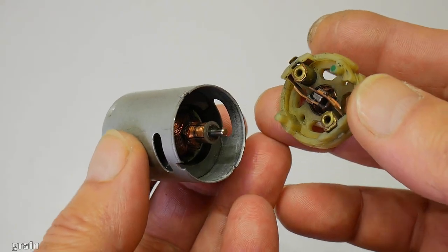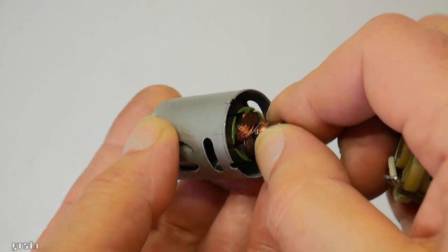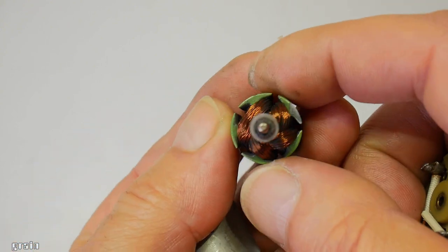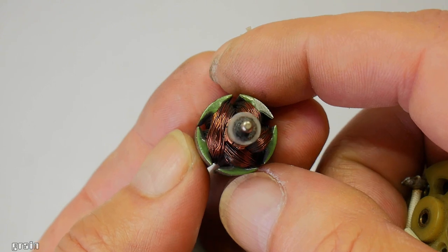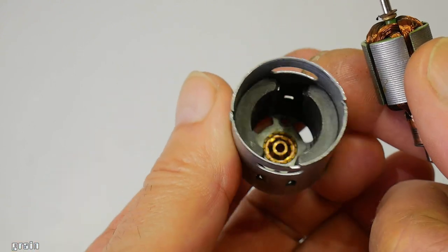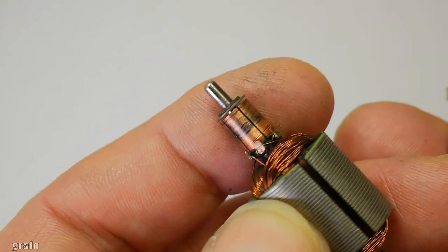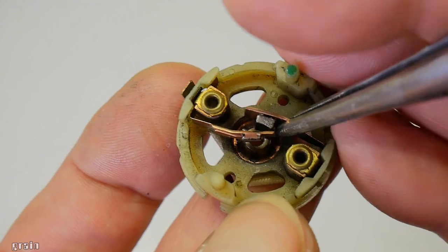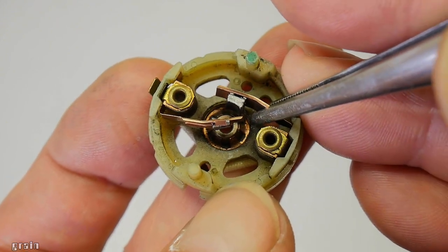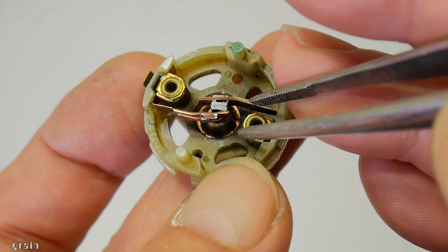This is a standard brushed DC motor. It consists of five coils and two magnets. The collector has five contacts. The brushes are made of graphite. One brush is already badly worn out.